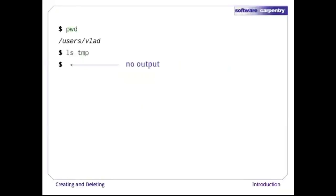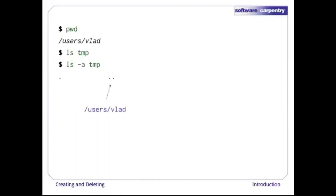We're in /users/vlad and temp is empty, which we can tell because ls doesn't print any output. If we use ls -a to show directories whose names begin with dot, we see that dot and dot-dot are there, as they always are. The first name, dot, refers to the directory itself, i.e., /users/vlad/temp. The second, dot-dot, refers to its parent, which just happens to be the current working directory, /users/vlad.